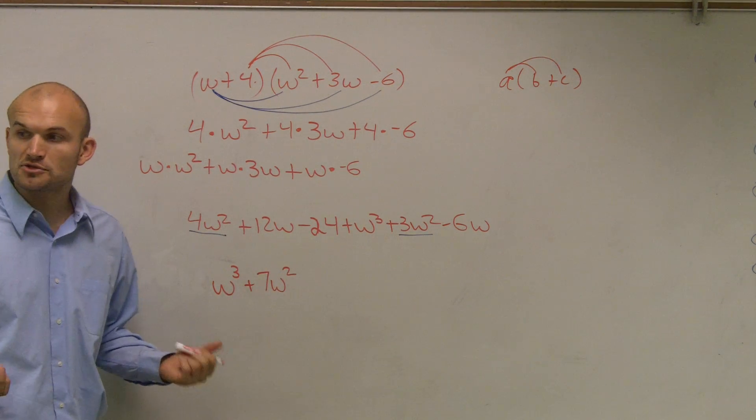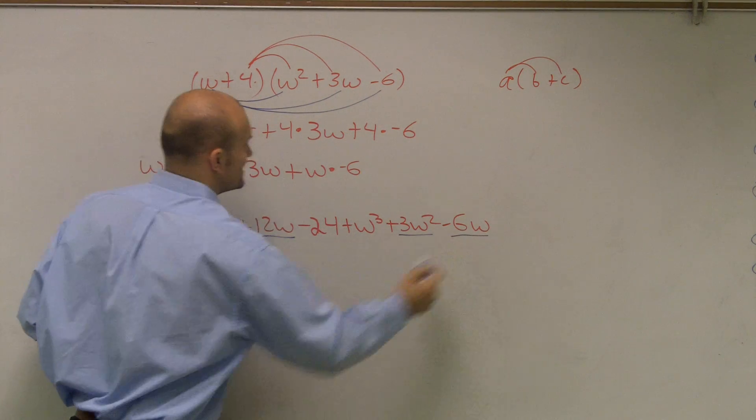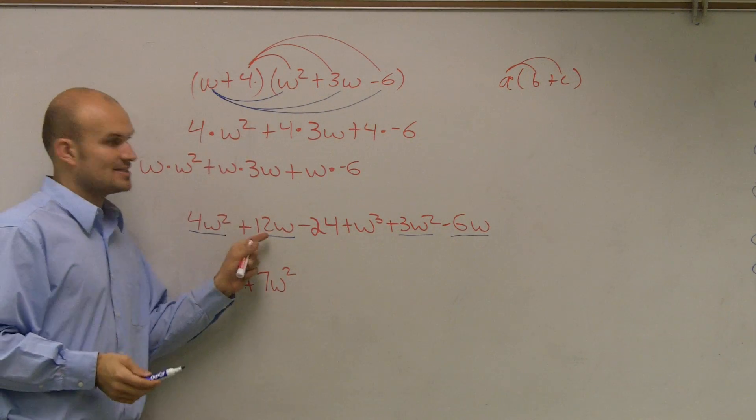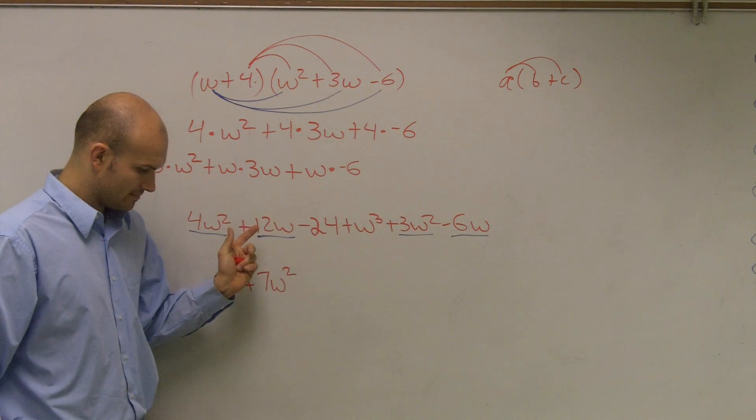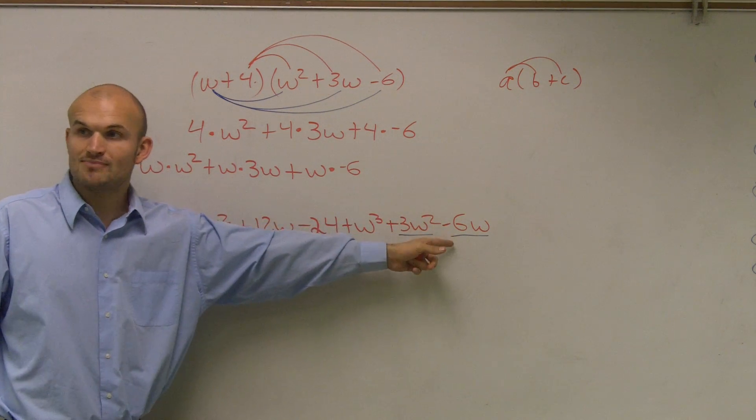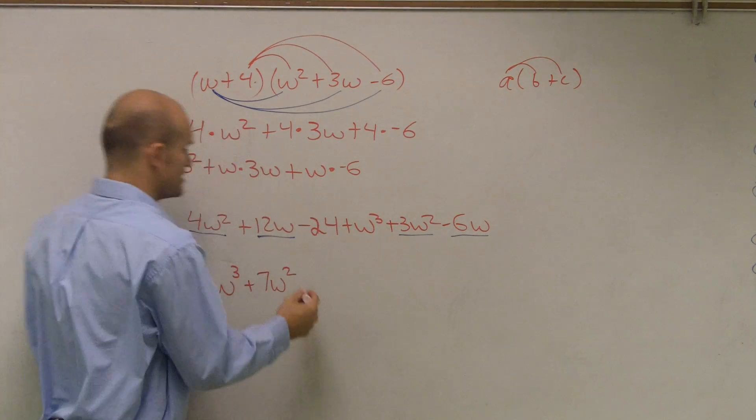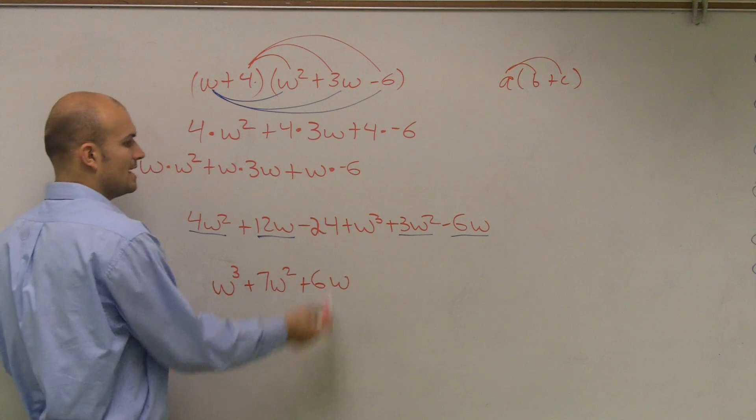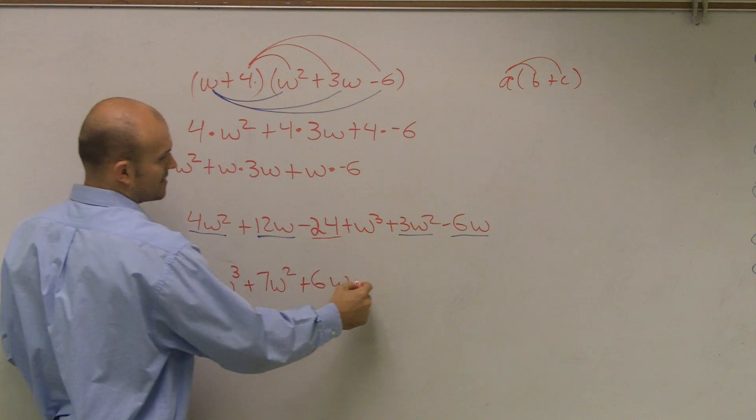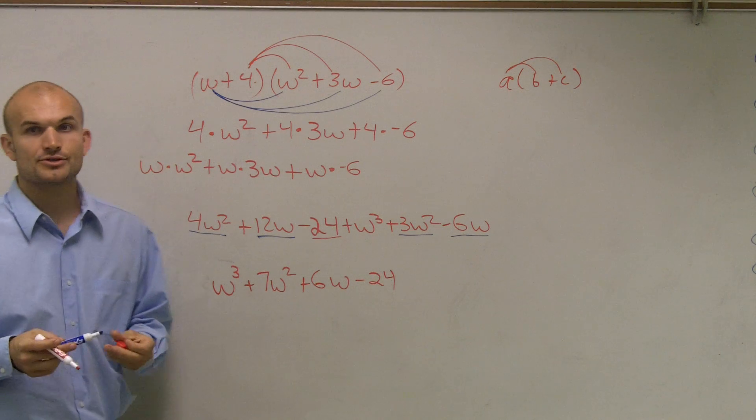Now, let's look at just w to the first power, just w's. Do we have two of those? Yeah, we do. 12w and a negative 6w. So it's positive and a negative. Positive 12w plus a negative, or minus 6w is going to provide you with 6w, a positive 6w. And then, is this my only number left? Yep, minus 24. So that would be your final answer.